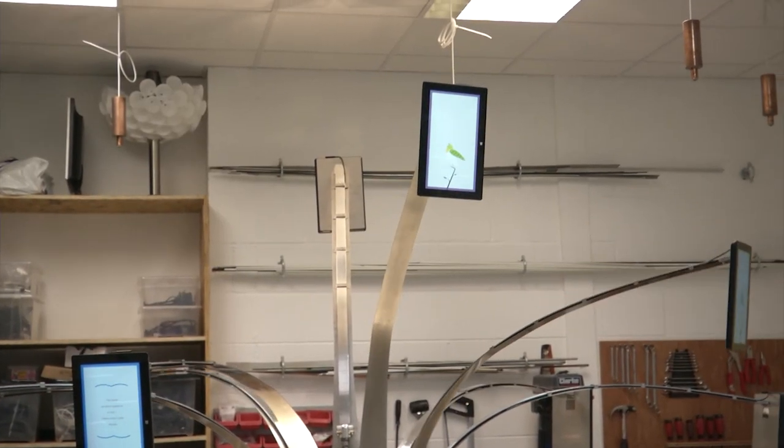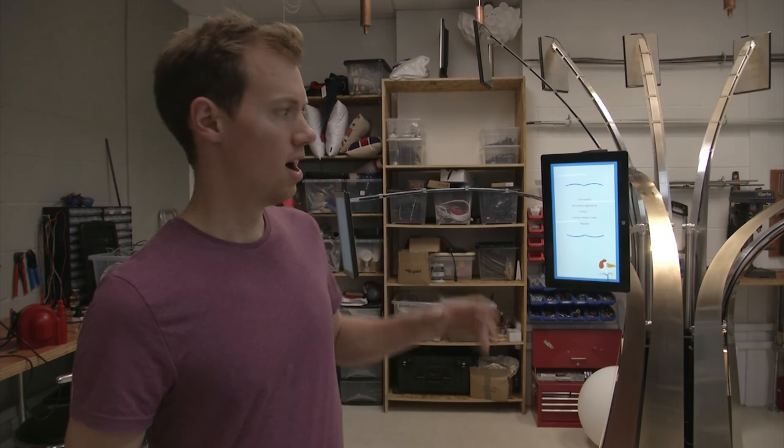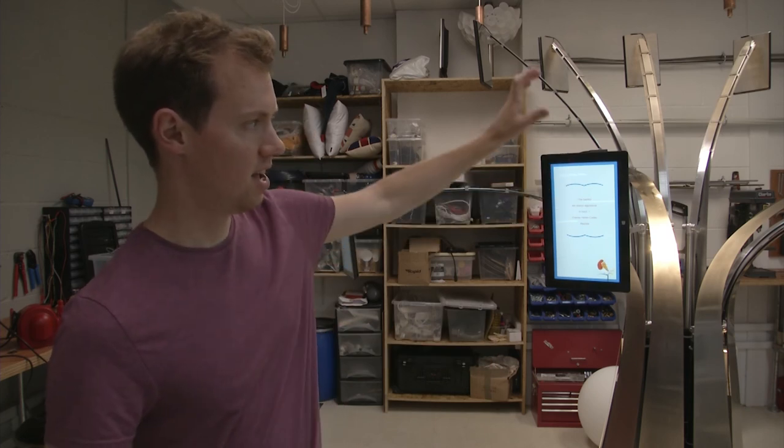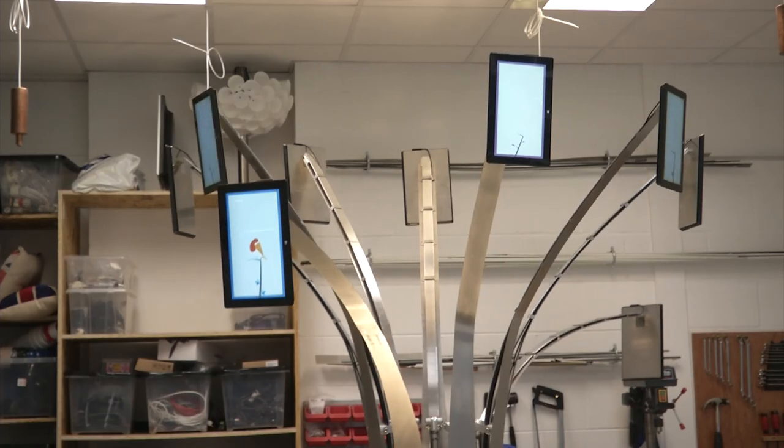We call it Tweeting Willow. The idea is when you tweet something about whatever's going on in the event or whatever you want to set the hashtag to, a bird lands on one of these branches and then it leans down towards you, gives a little chirp and then reveals that tweet.